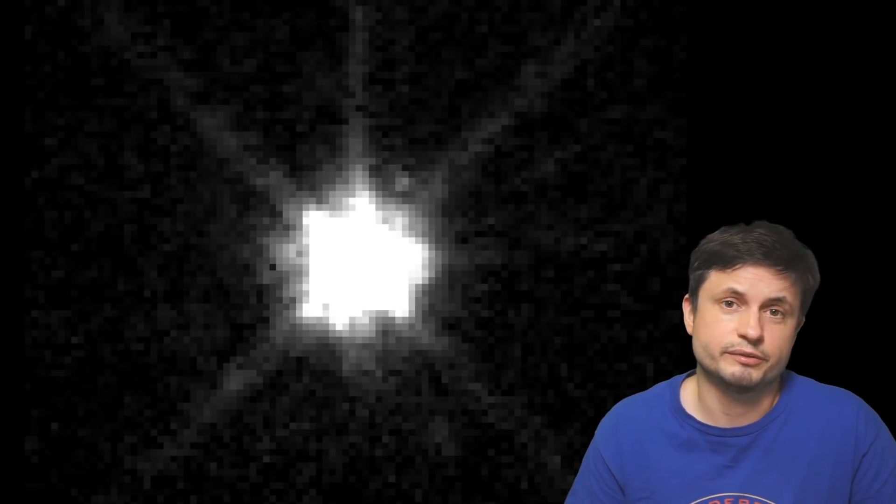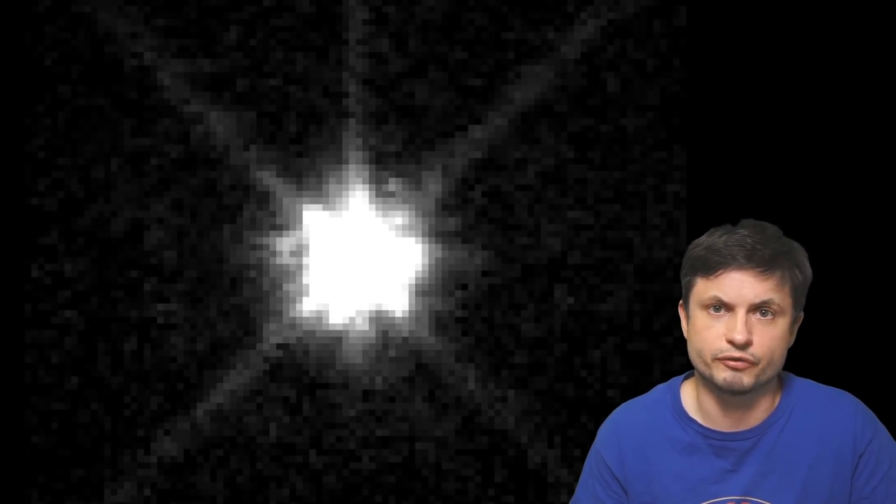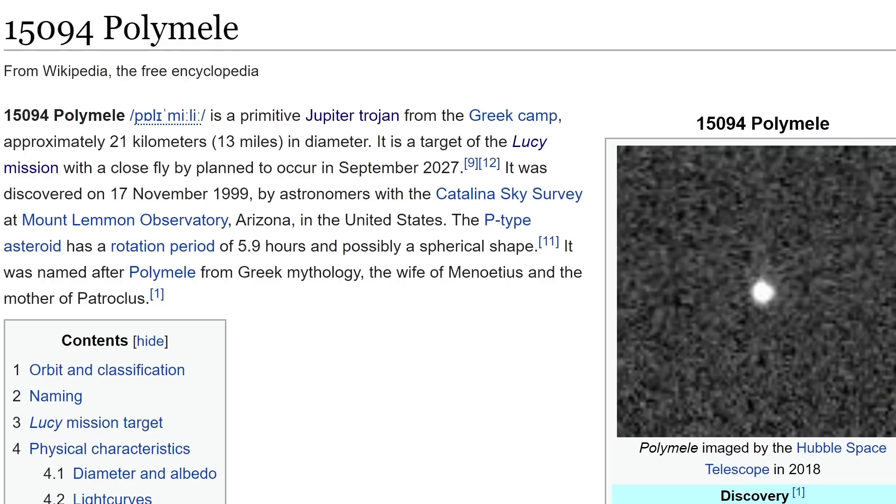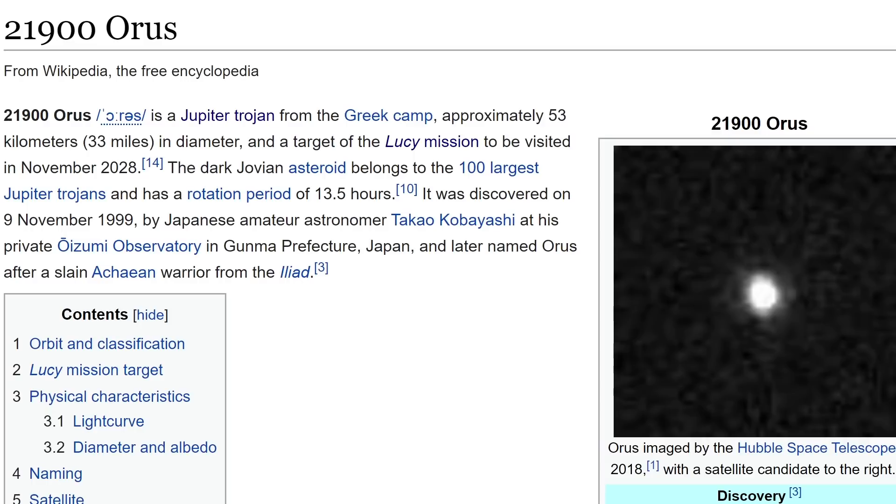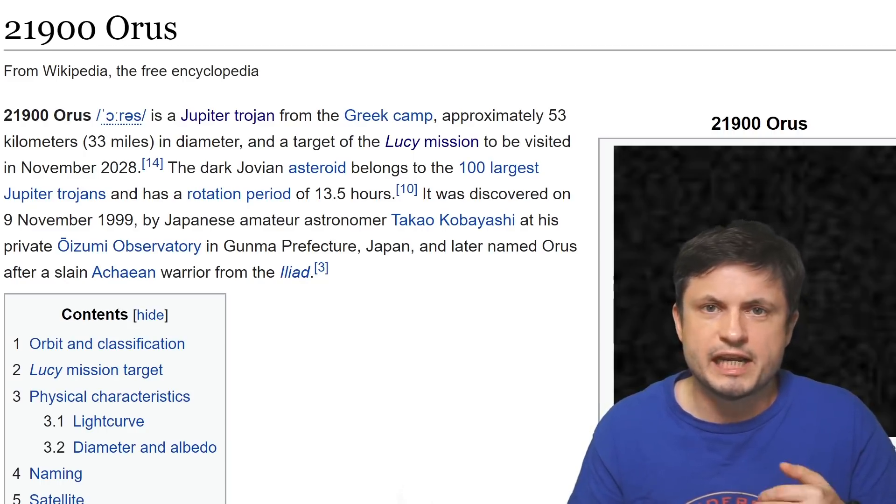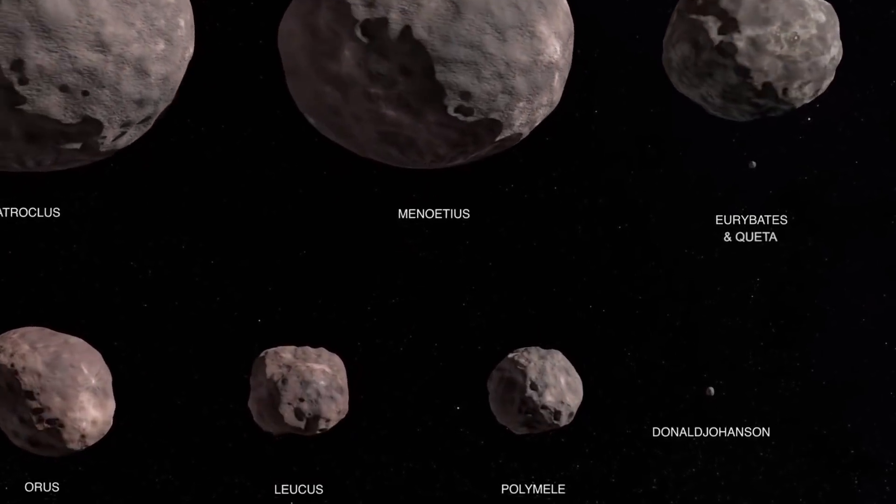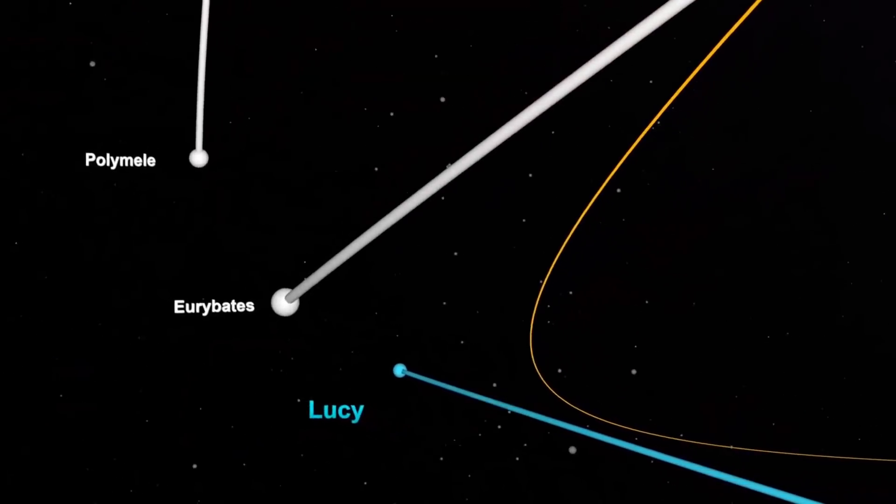As you can see right now, the resolution and the pictures we have of this is just a few pixels across. And so in about 6 years from now, we'll hopefully have extremely detailed pictures of all of this. Its next destination is going to be Polymele. And then the last target is going to be the Trojan known as Orus. All of these asteroids are relatively similar in size, anywhere from about 20 to 50 kilometers across. But all of them have a chance to potentially share completely different origins, which is of course one of the mysteries Lucy is trying to solve.